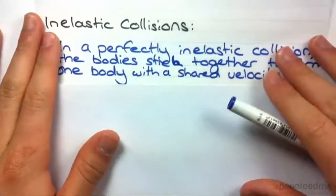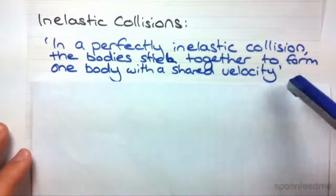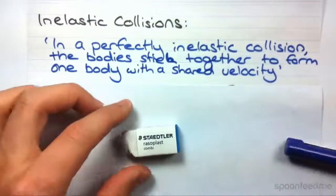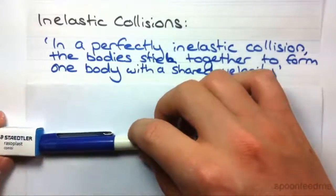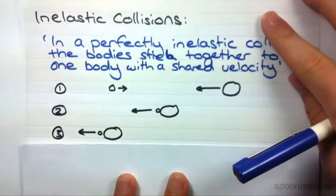Now we're going to first have a look at inelastic collisions because they're a bit easier to deal with. So let's have a look at the definition before we move on. In a perfectly inelastic collision, the bodies stick together to form one body with a shared velocity. So if you imagine the pen colliding into the eraser, they move away with one shared velocity. I've got a diagram of that here as well.